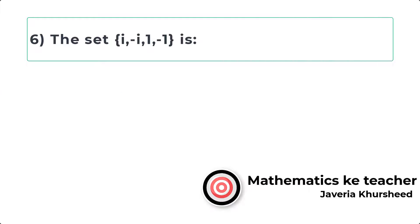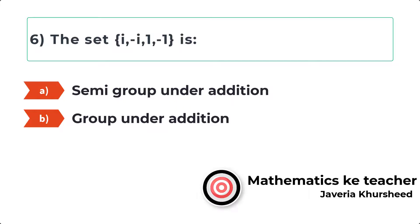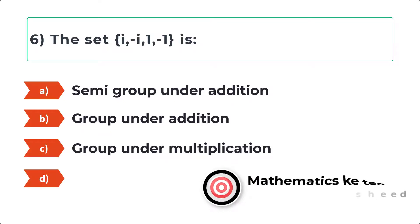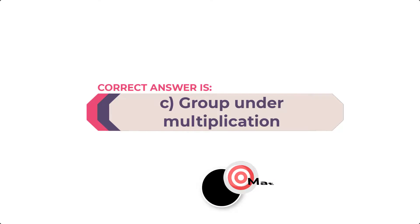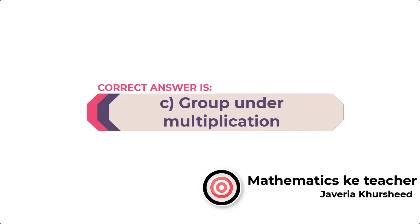Question 6: The set {iota, minus iota, 1, minus 1} is: A, Semi-group under addition; B, Group under addition; C, Group under multiplication; D, None of these. Correct answer is C, Group under multiplication.